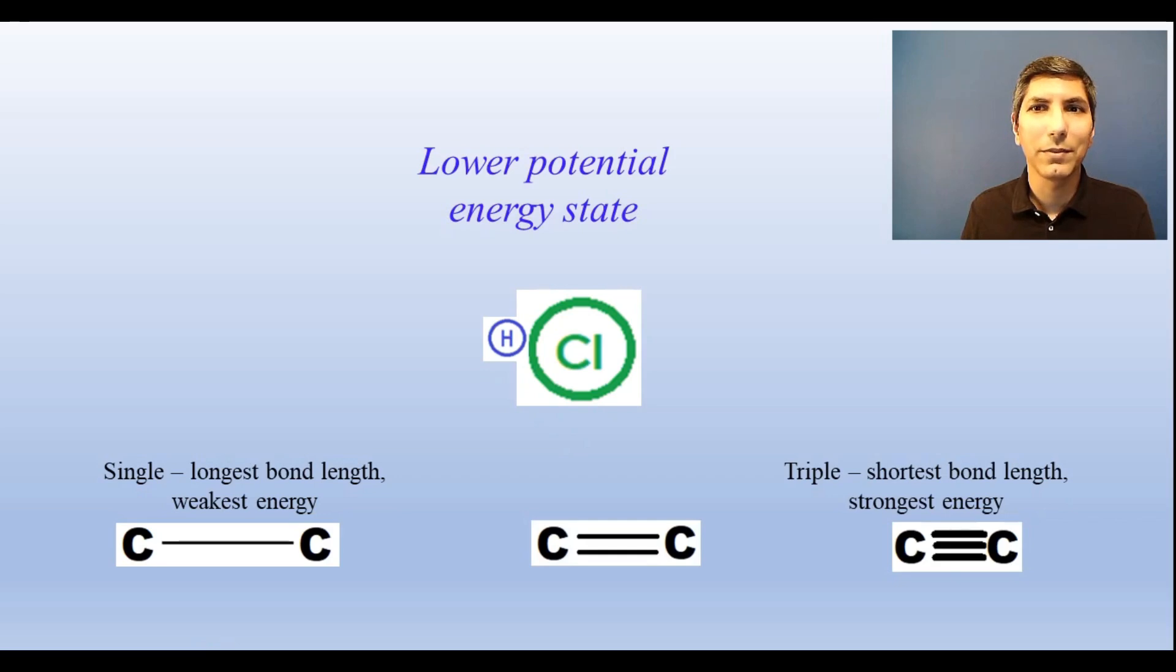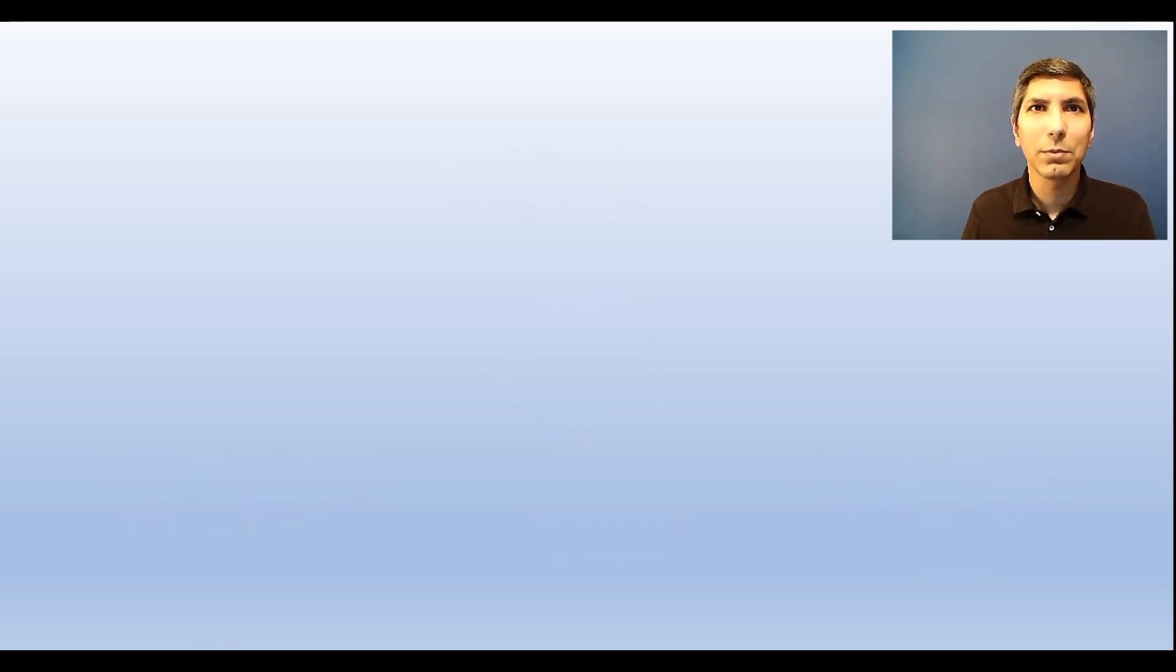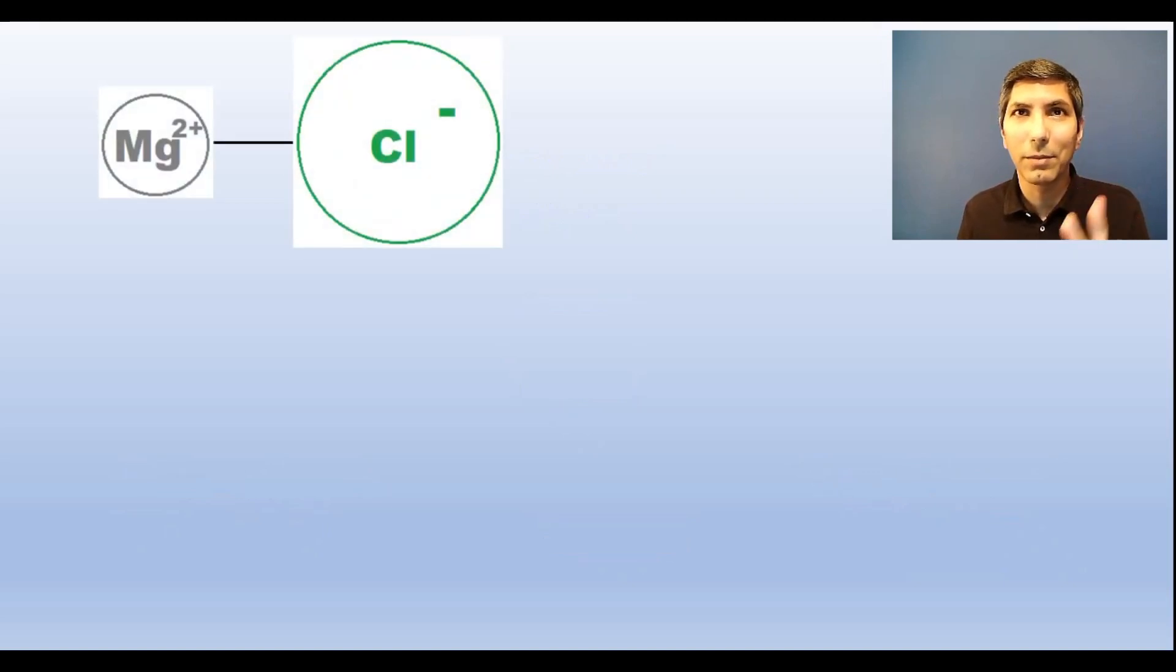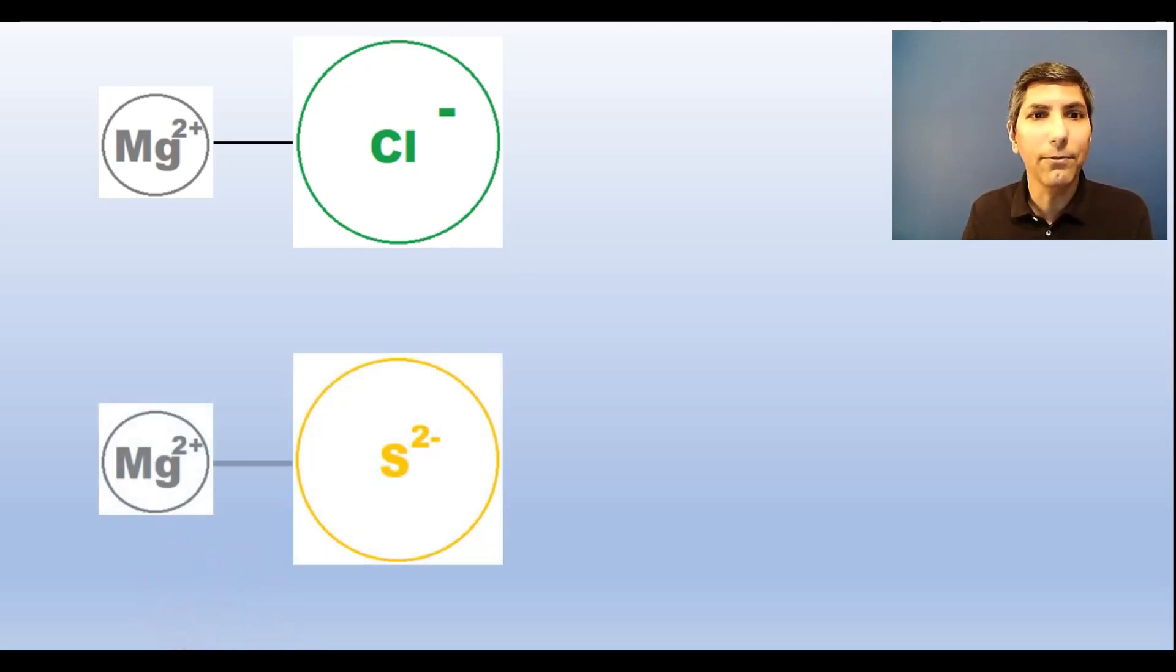Coulomb's law helps us decide how strongly ions will interact with each other. Remember, Coulomb's law has two variables: charge and distance. The greater the magnitude of charge, the stronger the attractions will be between the ions. So a magnesium ion with a +2 charge and a chloride ion with a -1 charge will have a fairly strong attraction, but magnesium is even more strongly attracted to the sulfide ion because sulfide has a -2 charge.